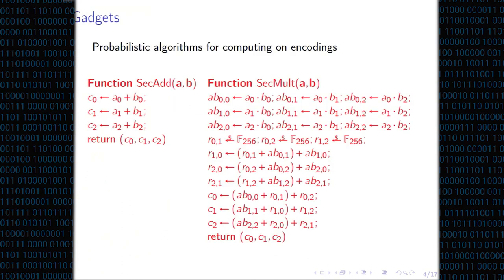The basic idea is: instead of computing with values, you compute over this encoding, and for each algorithm you come up with an algorithm that computes on this encoding. For addition, it's quite easy — you just do the addition component-wise. For multiplication, it's slightly more complicated: you compute partial products, do some random sampling, and then some further computations.